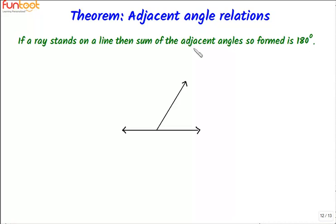Let's do a theorem on adjacent angled relations. If a ray stands on a line, then the sum of the adjacent angles so formed is 180 degrees.